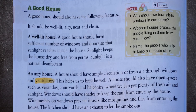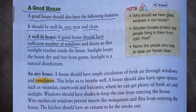A good house should also have the following features: it should be well-lit, airy, neat, and clean. A well-lit house should have a sufficient number of windows and doors so that sunlight reaches inside. Sunlight keeps the house dry and free from germs — sunlight is a natural disinfectant.